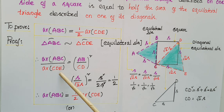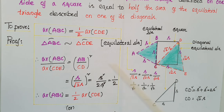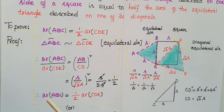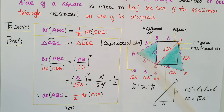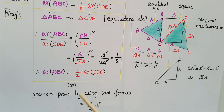We also know that the ratio of areas of two similar triangles is equal to the square of the ratio of their corresponding sides. So, area of ABC / area of CDE = (AB / CD)² = (S / √2S)² = (1/√2)² = 1/2. Therefore, area of triangle ABC = (1/2) × area of triangle CDE.